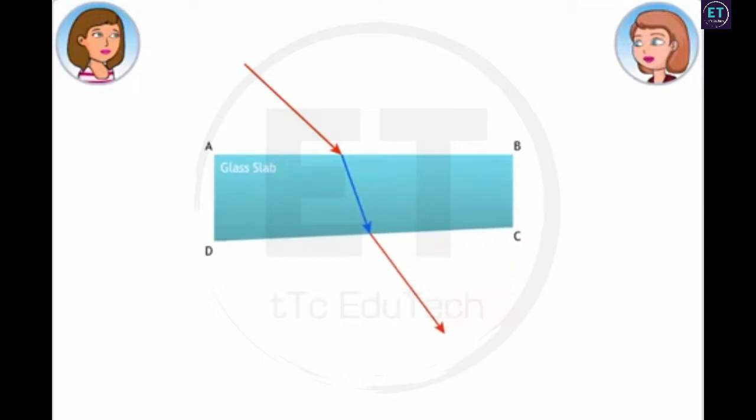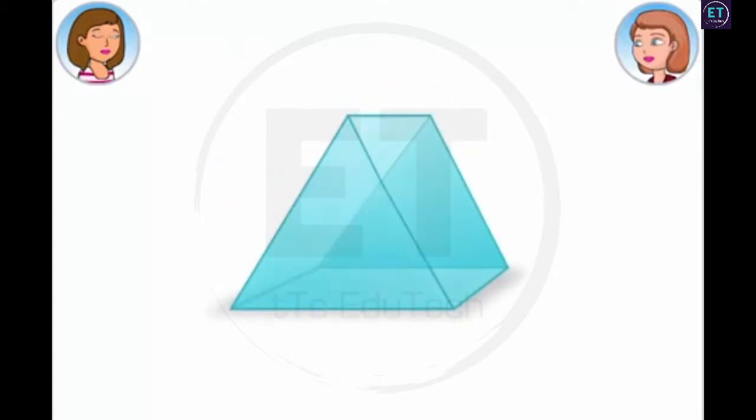We truncate the surface of the slab, represented by CD, so that the cross-section now forms a trapezium as shown. As you can see, now the emergent ray is not parallel to the incident ray anymore. As we continue truncating the slab, the direction of the emergent ray keeps changing. Finally, we get a shape with three rectangular surfaces and two triangular faces. We refer to this as a triangular prism. Wow! I can see how the emergent ray is emerging at a different angle altogether now.